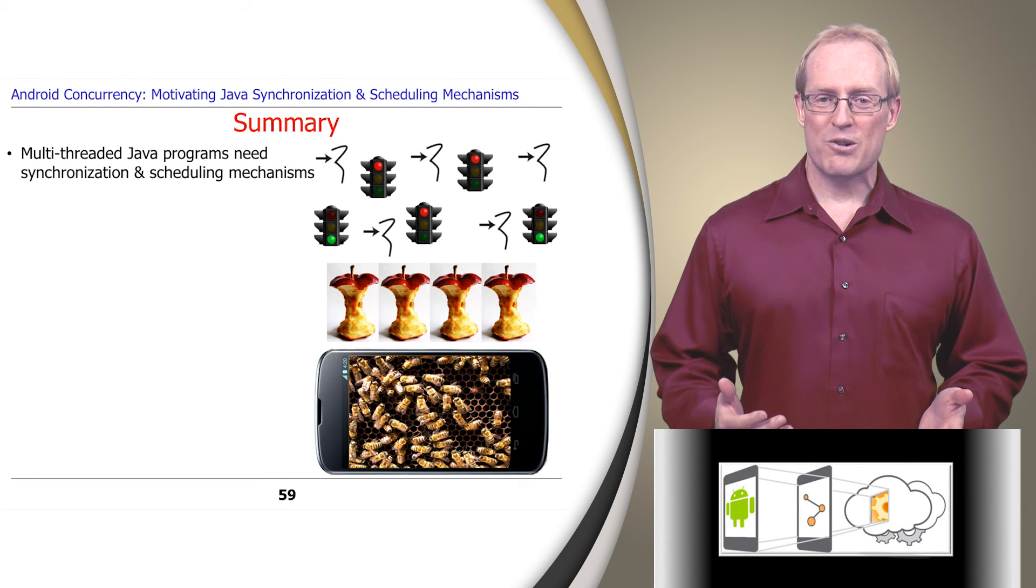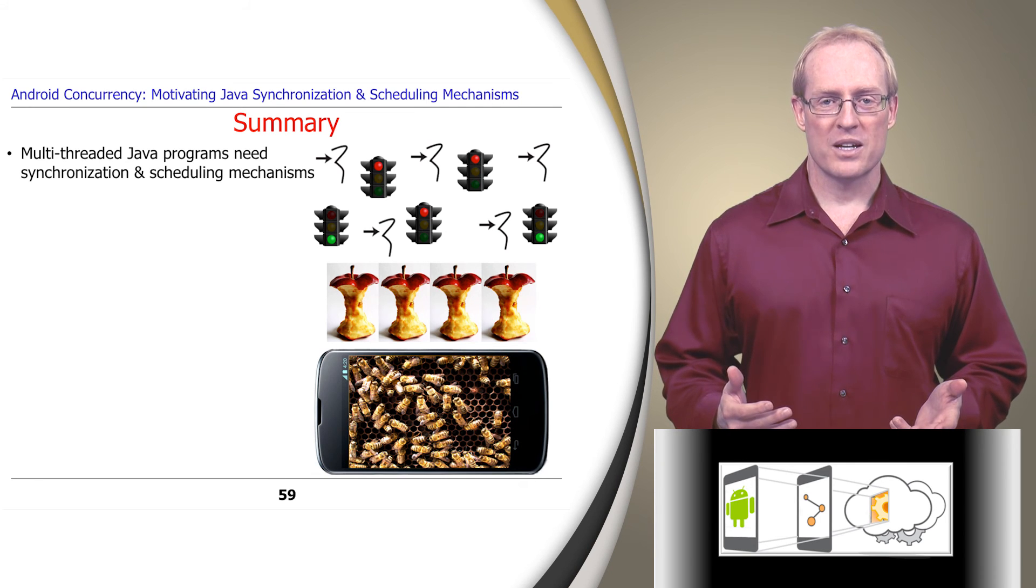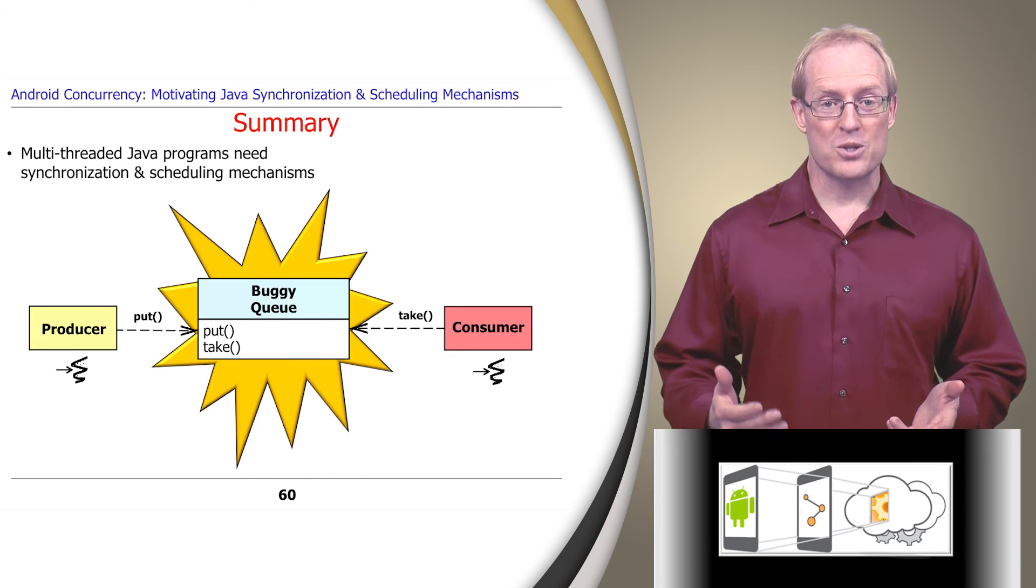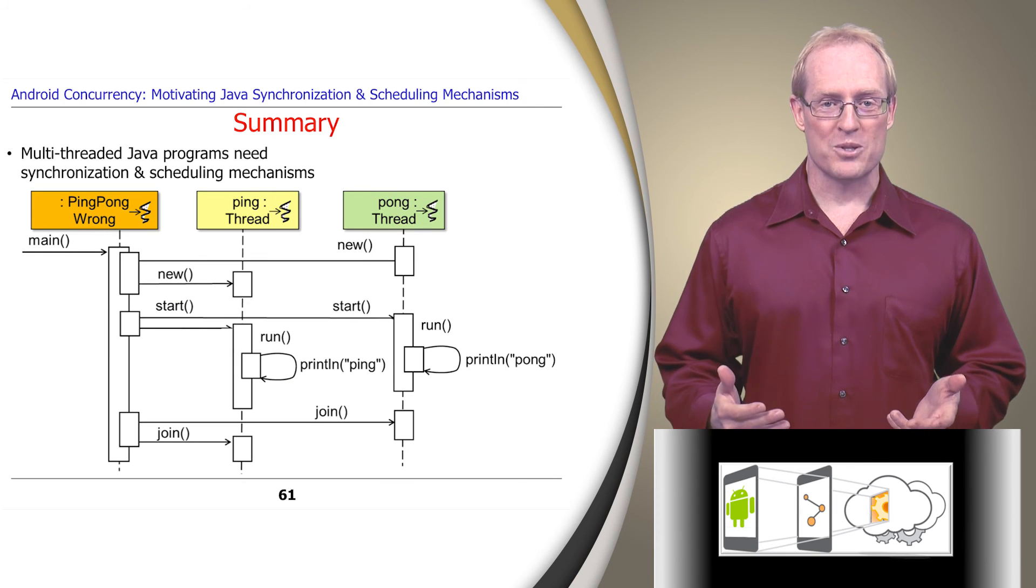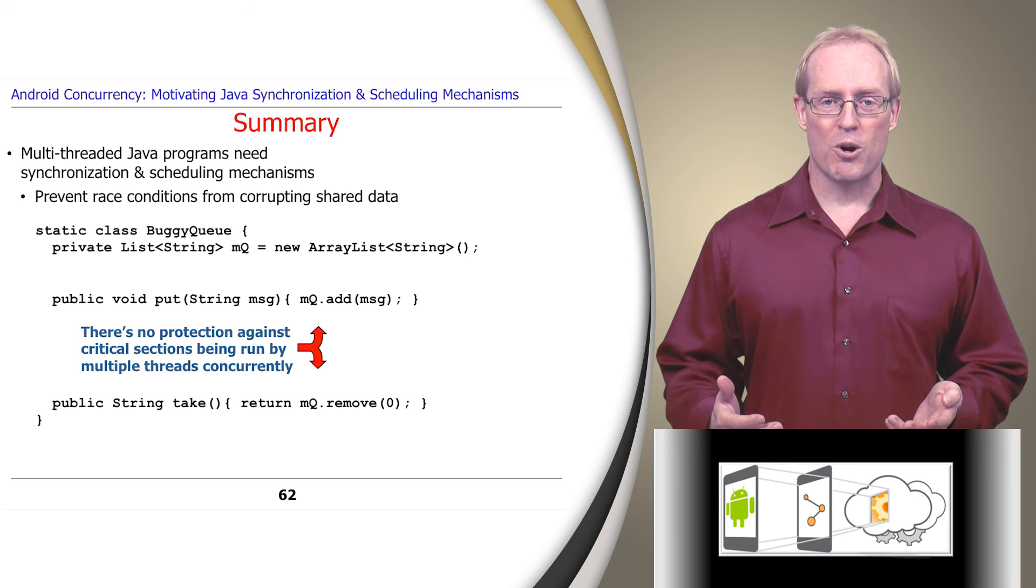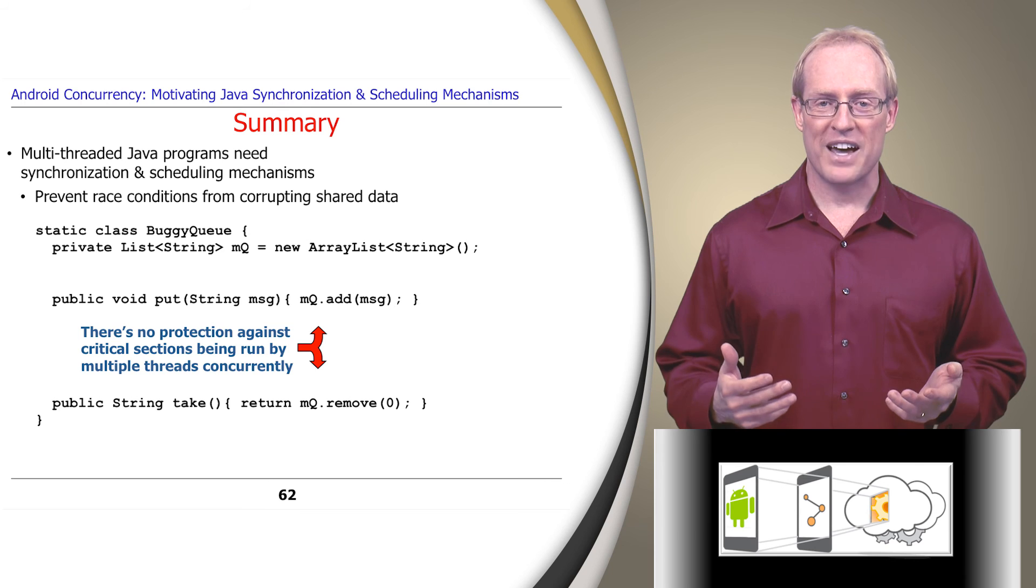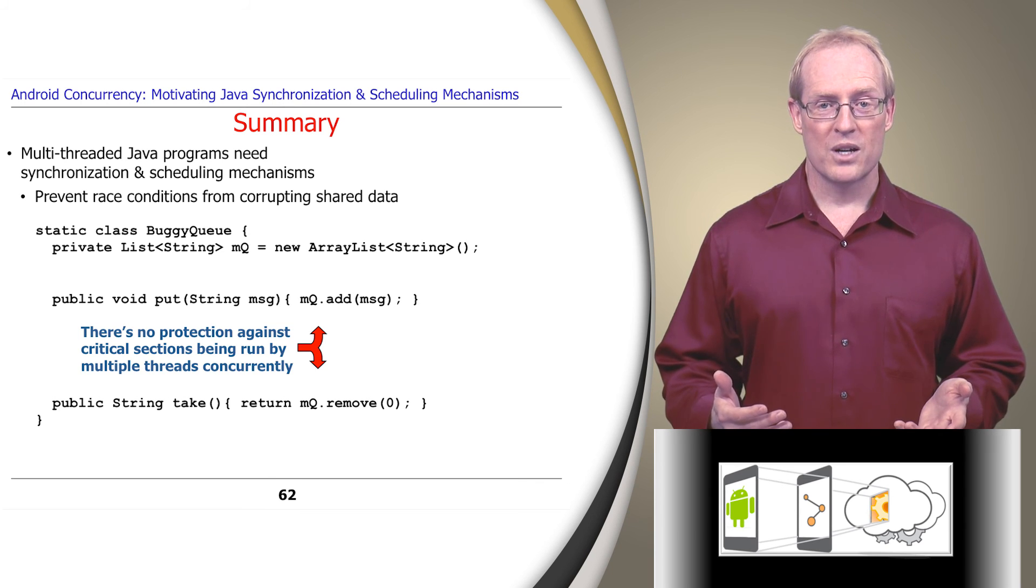In summary, synchronization and scheduling mechanisms are important for multi-threaded Java programs, such as our buggy producer and consumer and ping pong program examples described in this video. The buggy producer consumer program showed how race conditions can occur if critical sections aren't properly protected via synchronization mechanisms. Once we fix these problems, we'll see that there are also scheduling issues to resolve.